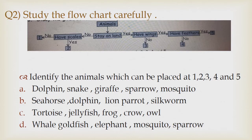Option A: Dolphin, snake, giraffe, sparrow, mosquito. Option B: Seahorse, dolphin, lion, parrot, silk horn.